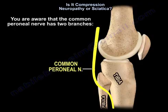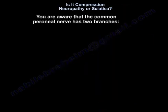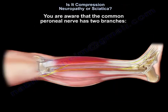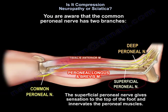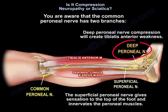The common perineal nerve has two branches: the superficial perineal, which gives sensation to the top of the foot and innervates the perineal muscles, and the deep perineal nerve, whose compression will create tibialis anterior weakness.